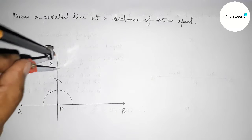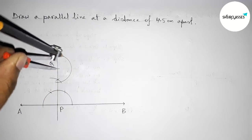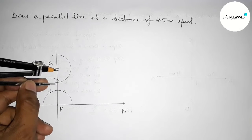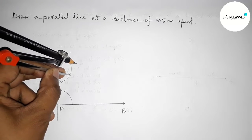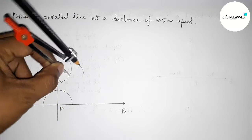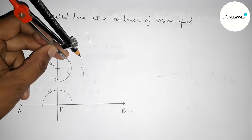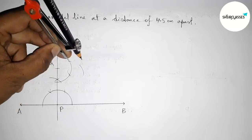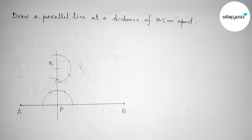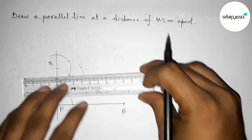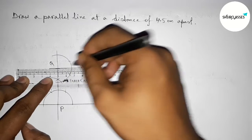Putting the compass on point Q, taking any length, and drawing an arc. Then putting the compass at each arc with the same length and cutting arcs to construct the perpendicular, joining this line segment to form the 90 degree angle at Q.